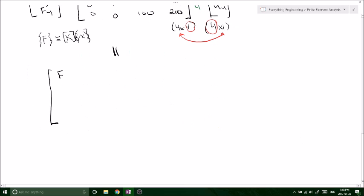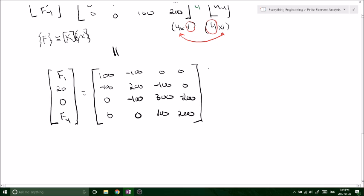Remember, F1 will be something because it's at a fixed support that is unknown. And F4, same thing, fixed support, unknown. F2 was 20. F3 is 0 because nothing's happening to F3 or at node 3. And there's our stiffness matrix again. Now, U1, 0, fixed support. U4, 0, fixed support. U2, U3, unknown.